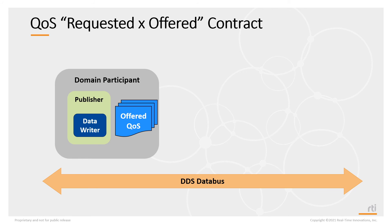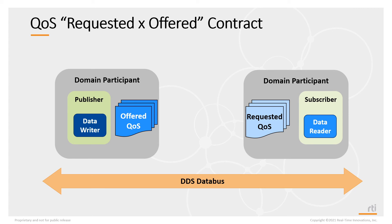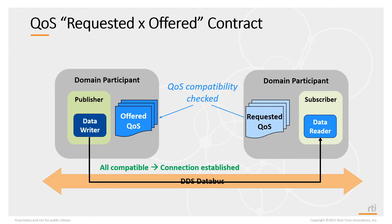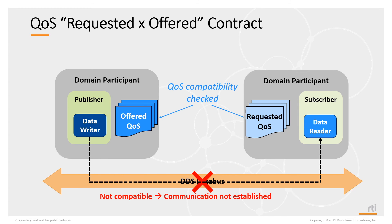Let's look at the requested versus offered QoS contract in operation. Here we have an application on the left with a data writer sending data for a topic at a particular offered level of QoS. When a data reader starts up, it requests data at a requested level of QoS. Upon discovery, DDS checks for QoS compatibility. If the offered meets or exceeds the requested level, the connection is established. If they're not compatible, communications are not established, and both the sending and receiving applications receive a notification that an incompatible QoS was found.